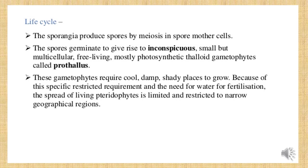The sporangia produce spores by meiosis in the spore mother cell. Meiosis is also called reduction division. After the spores are produced, they germinate and give rise to multicellular, free-living gametophytes. Gametophytes are the plants which bear the male and female gametes. These gametophytes further grow in damp places.